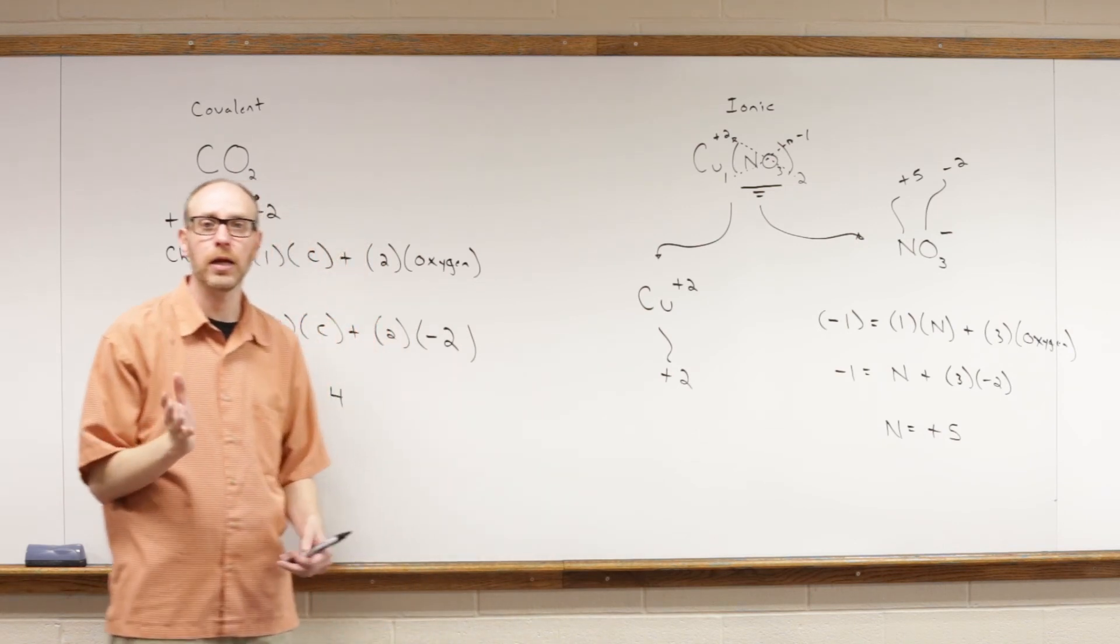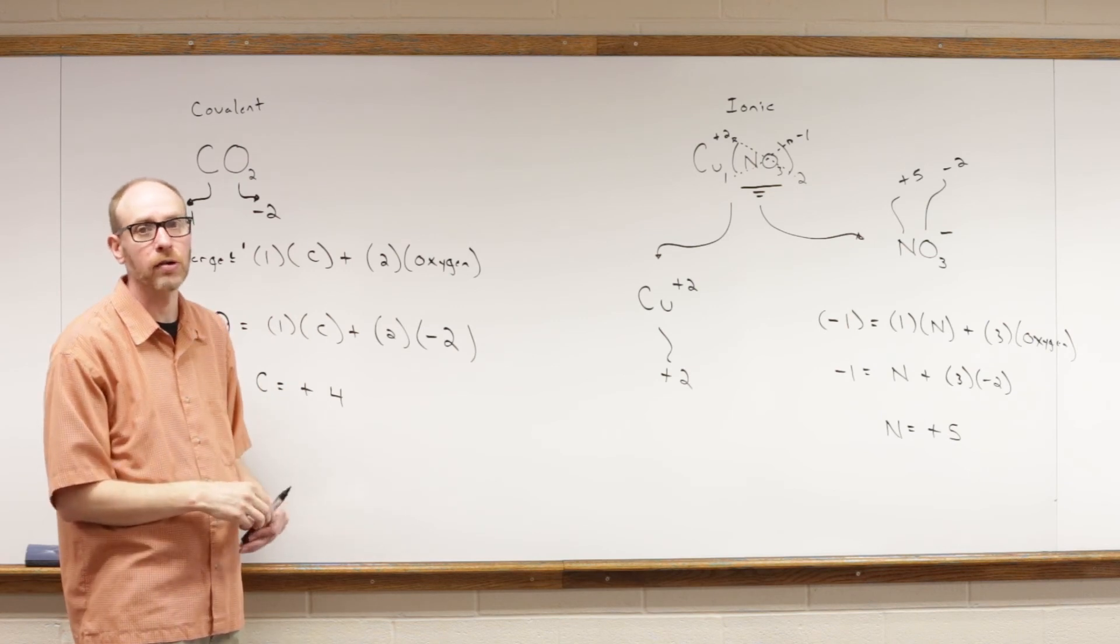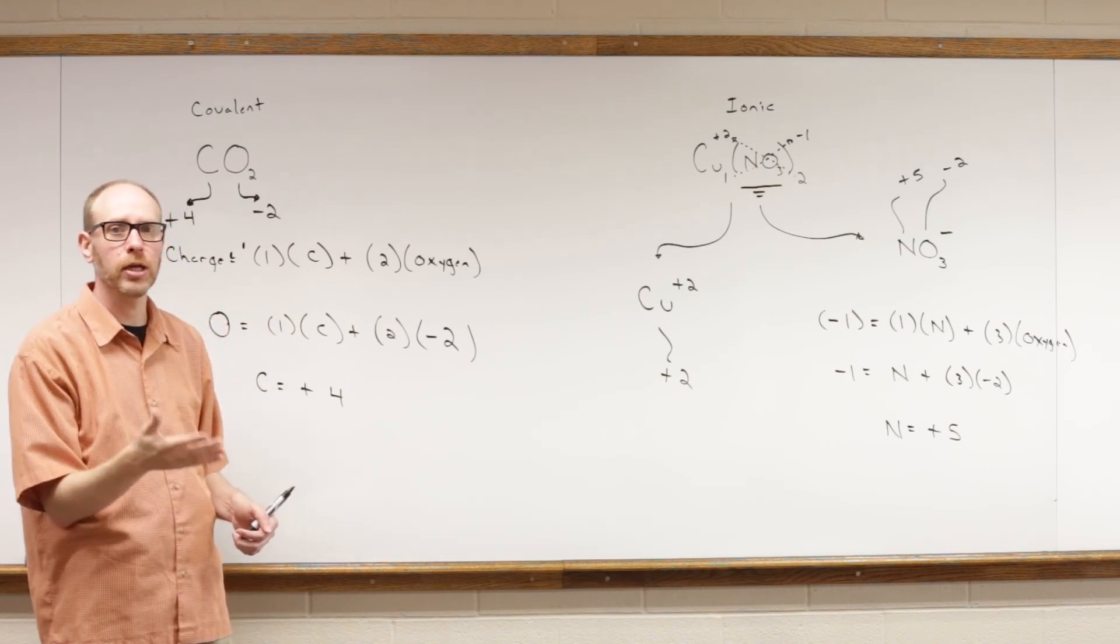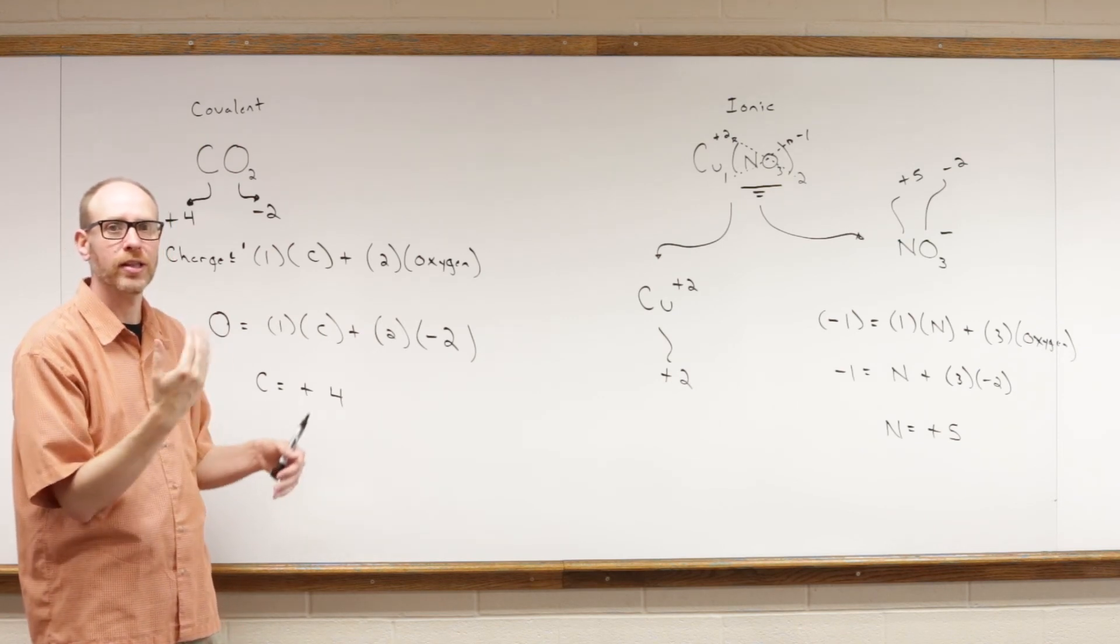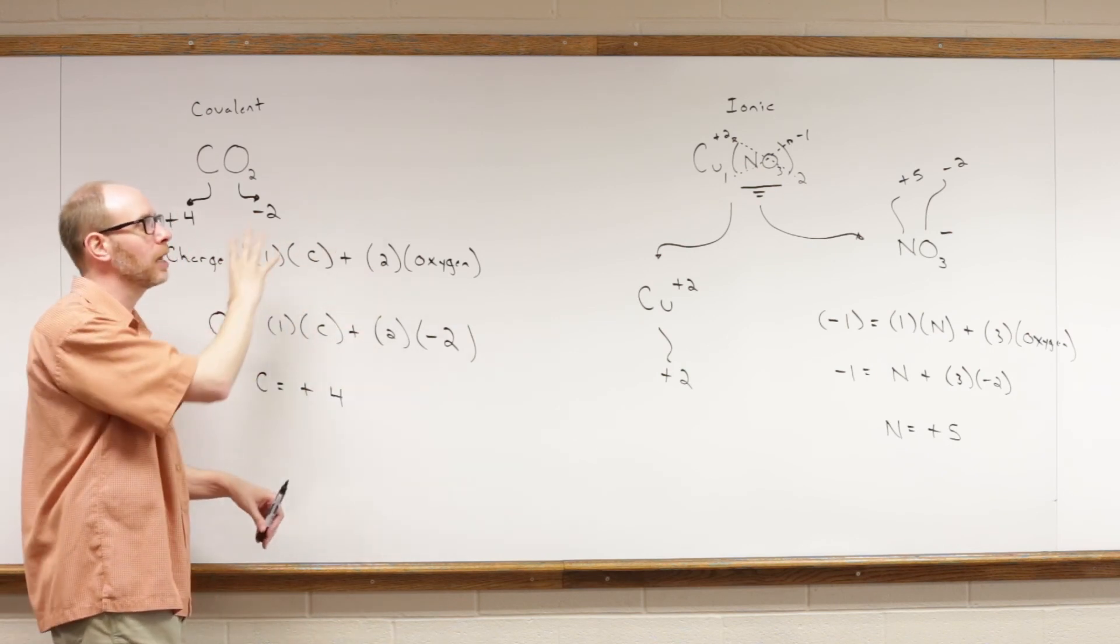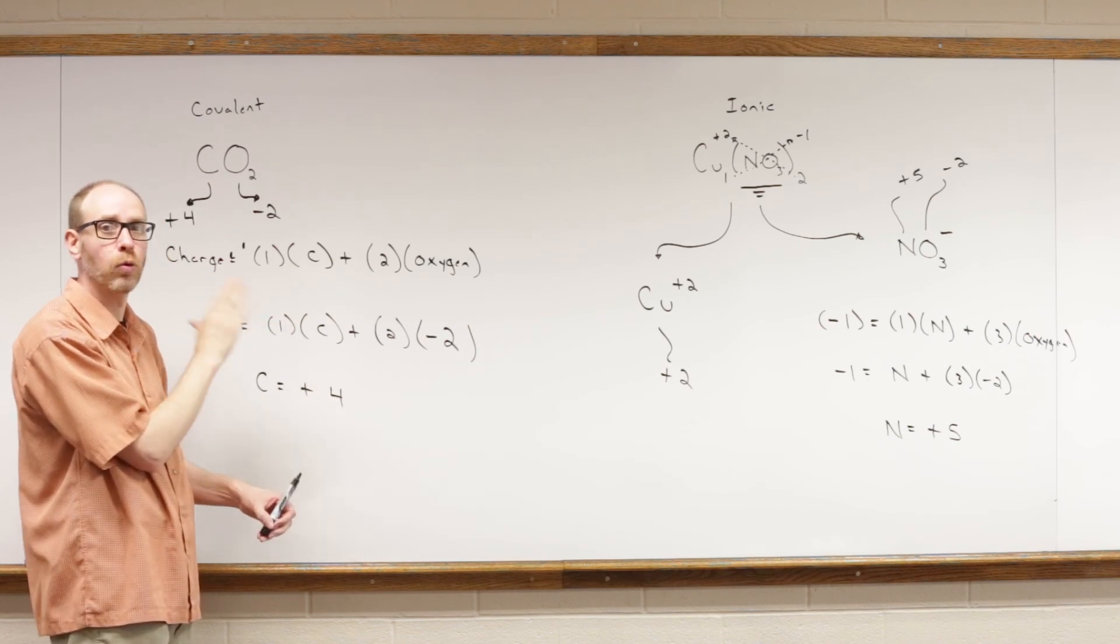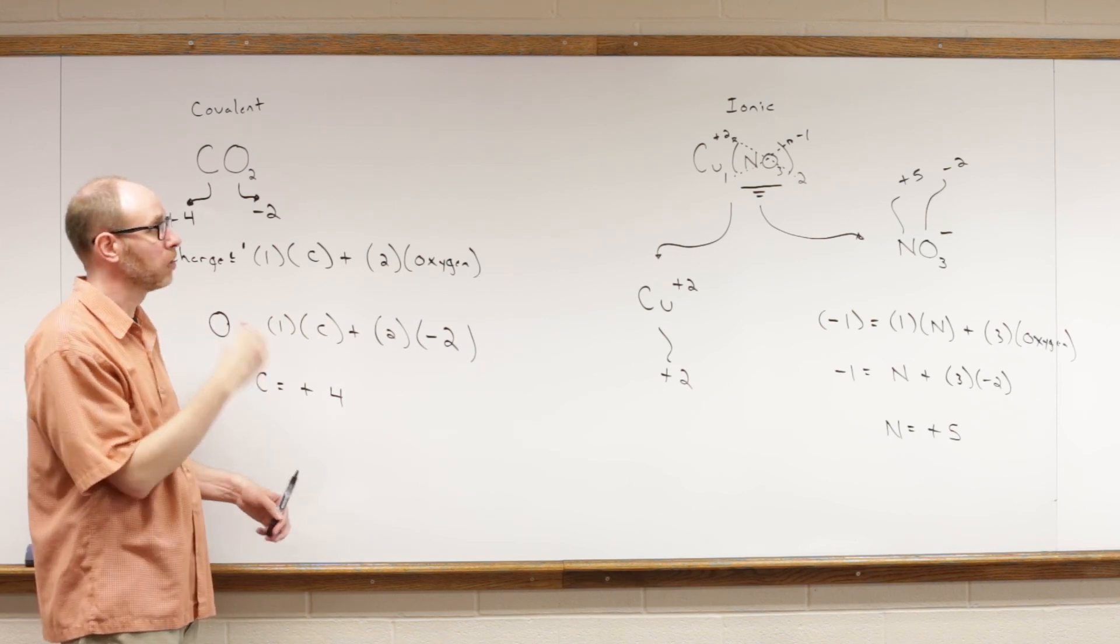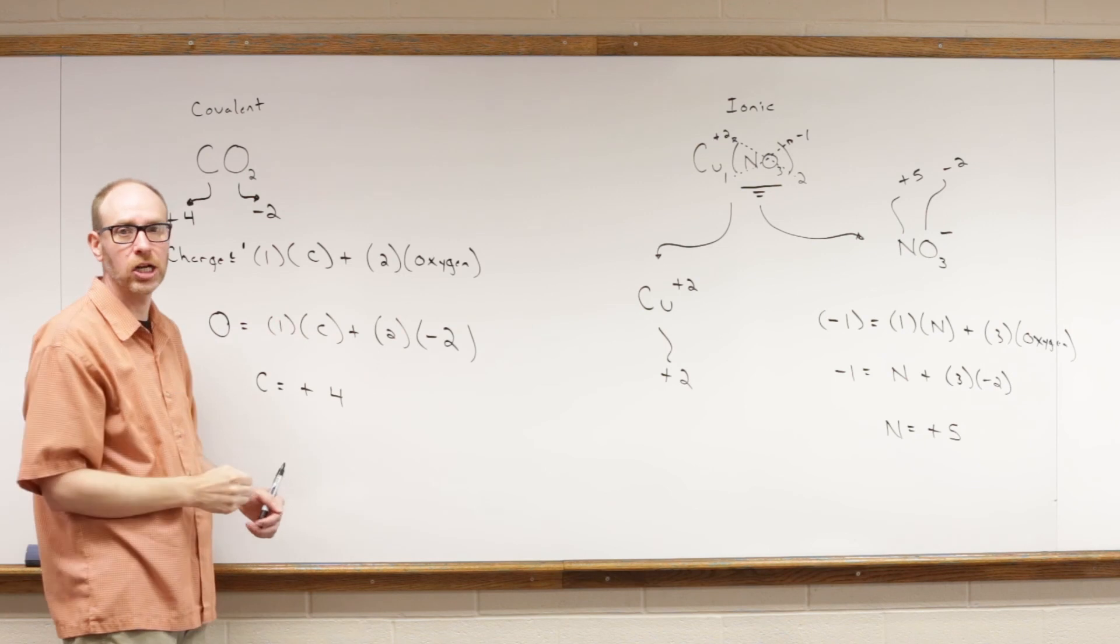Now, this is going to become very important because we're going to start looking at reactions using different compounds, and we're going to have to try to identify how many electrons are being transferred, what's being oxidized, what's being reduced, what's the oxidizing agent, what's the reducing agent. It's all going to come back to being able to recognize what the oxidation number will be for each of the elements in all of the compounds. That's the next step for using oxidation number.